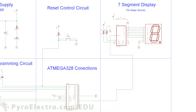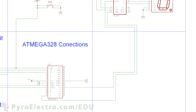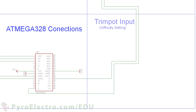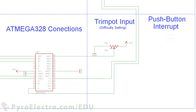Digital pin 8 will connect to the reset pin of the 4026. The trim pot will be connected to power, ground, and analog pin 5. The push button interrupt for user input will connect to interrupt 1. We'll use a pull-down resistor with a capacitor to help generate a clean interrupt signal.